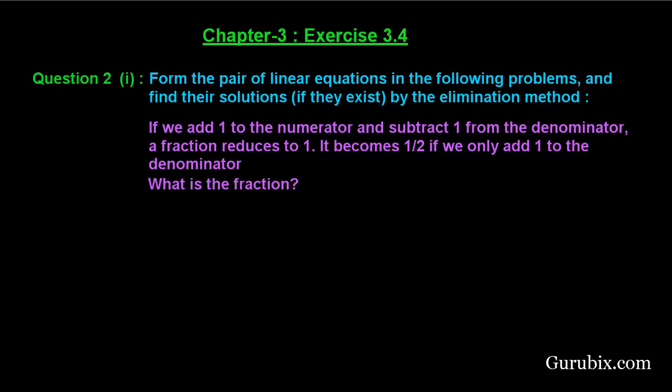Welcome friends. Let us solve the first part of question number 2 of exercise 3.4 of chapter 3. The question says: form the pair of linear equations in the following problem and find their solution if they exist by the elimination method. The problem is: if we add 1 to the numerator and subtract 1 from the denominator, then a fraction reduces to 1. It becomes 1 over 2 if we only add 1 to the denominator. What is the fraction?